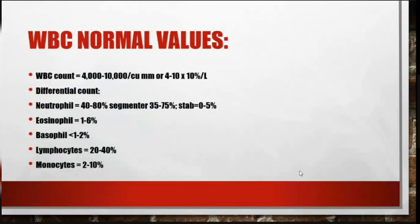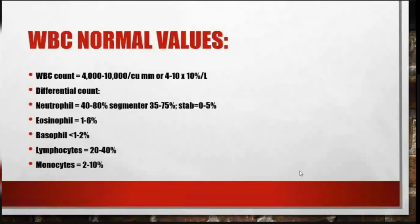Normal WBC values: WBC count is 4,000 to 10,000 per cubic millimeter, in which neutrophils are 40 to 80 percent, eosinophils are 1 to 6 percent, basophils are less than 1 to 2 percent, lymphocytes are 20 to 40 percent, and monocytes are 2 to 10 percent.